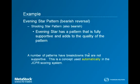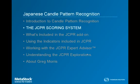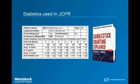This is a concept that is used automatically in the JCPR scoring, and a lot of the patterns have breakdowns that are not supportive. I'd like to talk about a few of the other components included automatically in the new scoring system designed for the JCPR add-on. On this screen I've included a snapshot from Candlestick Charting Explained by Greg Morris. This table includes pattern statistics from 7,275 common stocks with research conducted over 14.6 million days of data. All of these statistics are included in the JCPR scoring system.